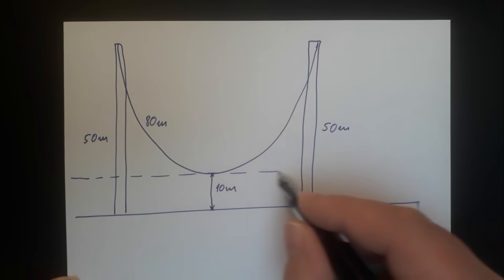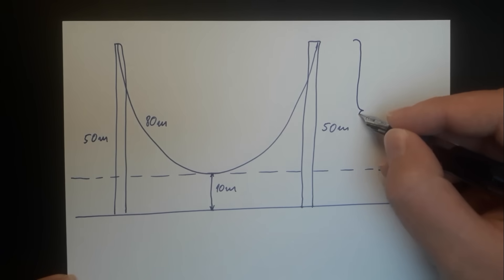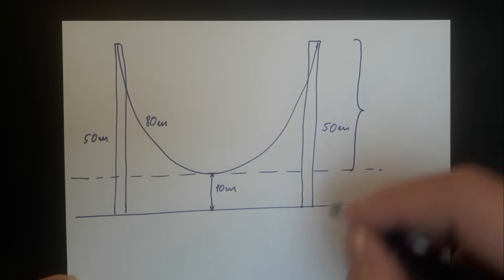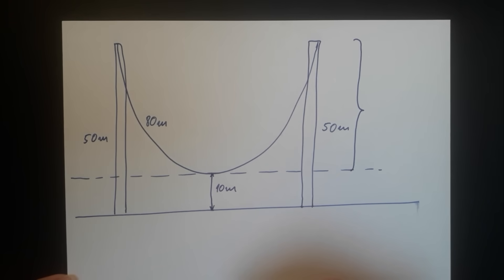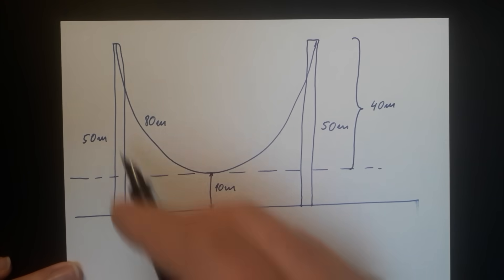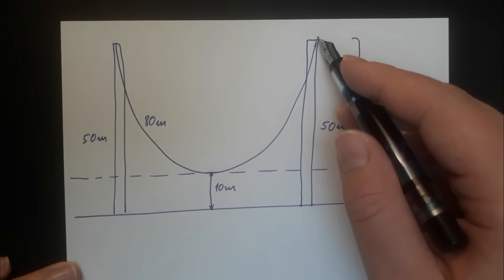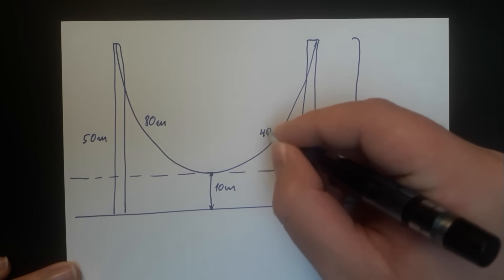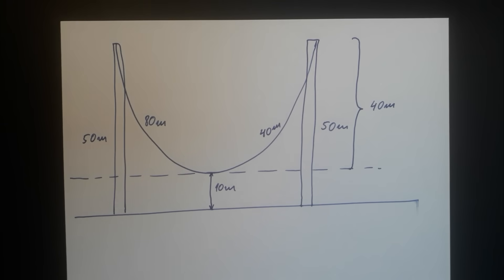Since the cable is 10 meters above the ground and the height of the pole is 50 meters, the lowest point of the cable is 40 meters from the top of the pole. Since the entire length of the cable is 80 meters, half of that is 40 meters. That means that the cable is folded exactly in half — which means that the two poles are coincident. There is no distance between them.